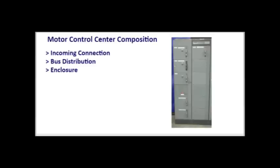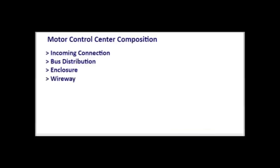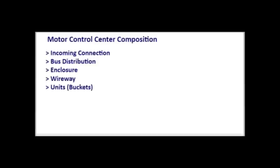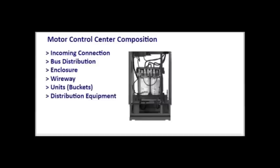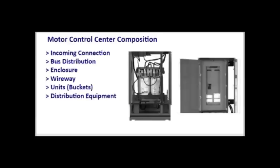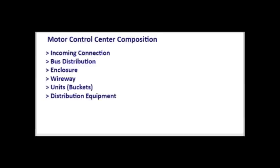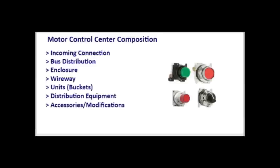Control and power wire is distributed through the vertical, top, and bottom wireways. The units, also known as buckets, contain motor starters or feeder switches or breakers. Other distribution equipment such as transformers or panel boards can also be contained in the motor control center. Accessories and modifications such as push buttons, selector switches, and indicating lights may be added to tailor units for specific applications.